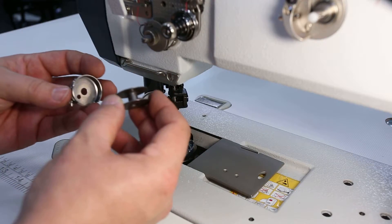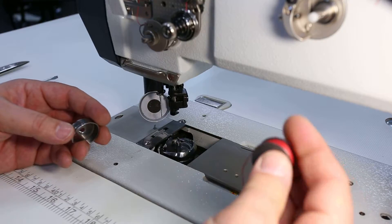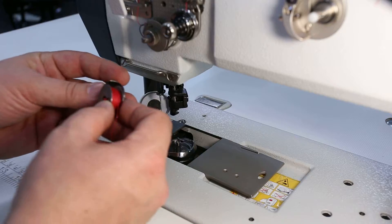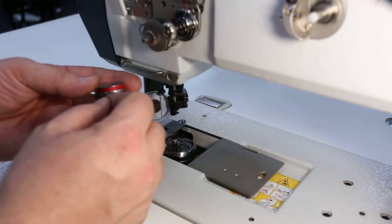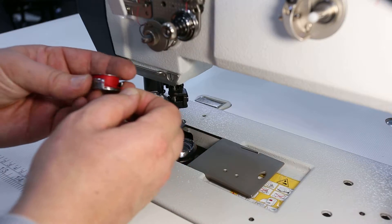We can place this onto the bobbin winder, and once the bobbin has been wound, we can then replace it back into the bobbin case through the slit, under the spring.